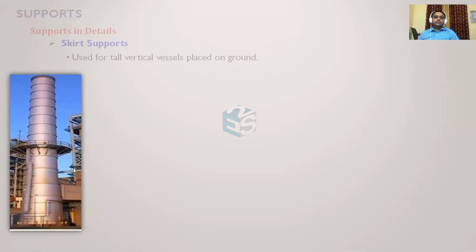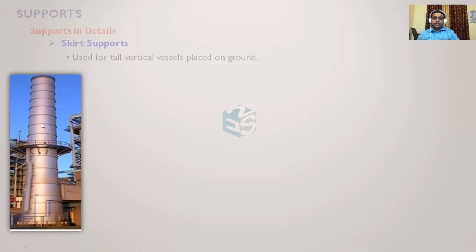Here you can see a tall column with a platform in between; a ladder has been provided for access to the platform. This tall column has a skirt support, but looking closely, it is not a cylindrical support — it is a conical skirt. When to go for a conical versus cylindrical skirt will be discussed in the upcoming slides.